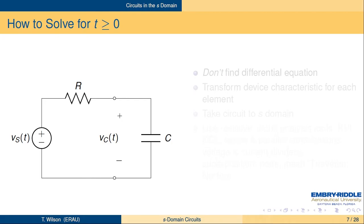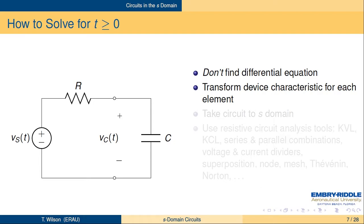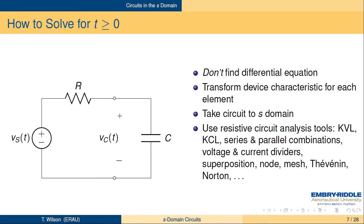For T greater than or equal to zero, we're not going to find the differential equation, but we're going to find the Laplace transform of the device characteristic for each of the elements. That'll put the circuit — we say we're taking the circuit into the S-domain — and then we can just use resistive circuit analysis: everything we've used before, KVL, KCL, series and parallel, etc., to solve the circuit.